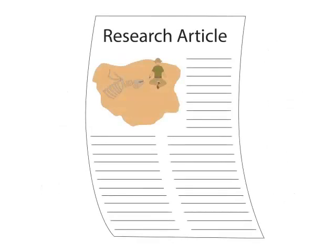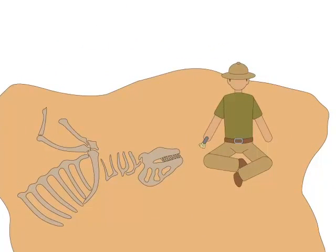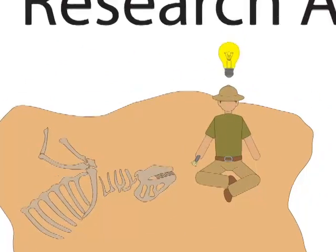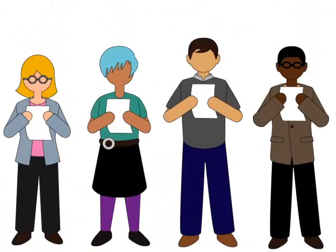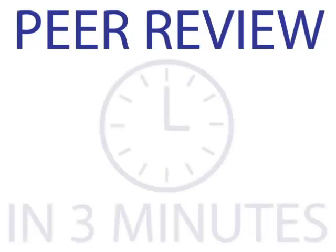First of all, the article reports a scholar's research practice and findings, and it's written with an audience of other researchers in mind. Finally, in order to be published and accepted by the scholarly community, the article must pass several quality tests. The most important of these tests is called peer review.